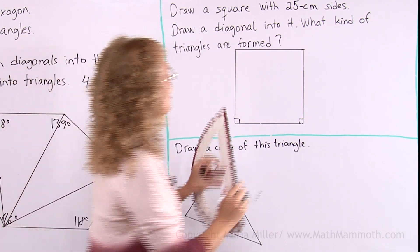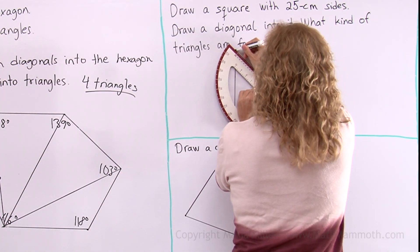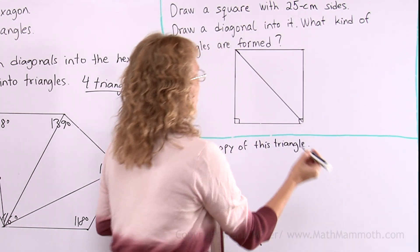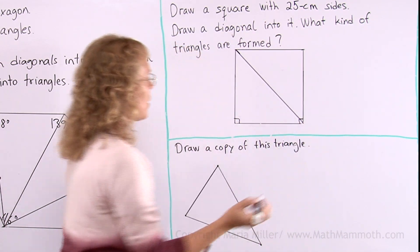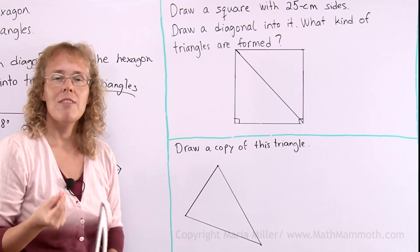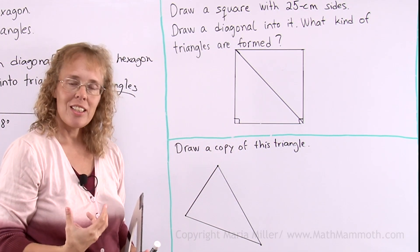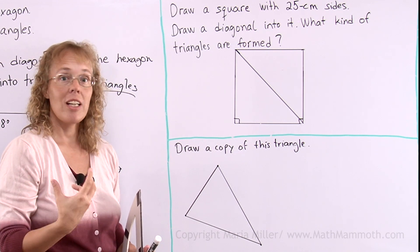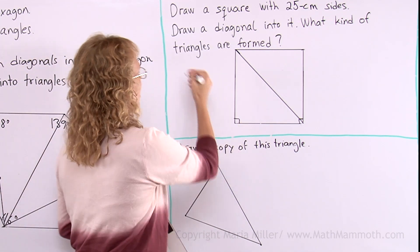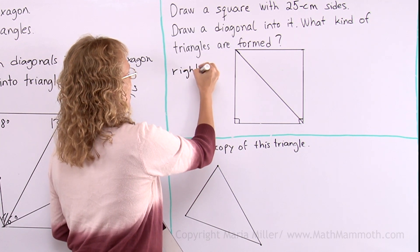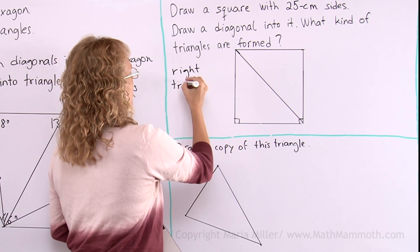Draw a diagonal into it. What kind of triangles are formed? The question has to do specifically with the angles of the triangles. Is this triangle an obtuse triangle, an acute triangle or a right triangle? And since it has one right angle, it is a right triangle. And this one too. So they are right triangles.